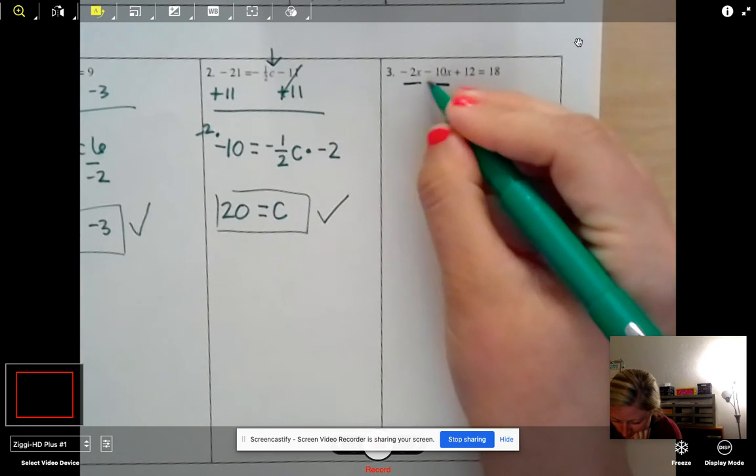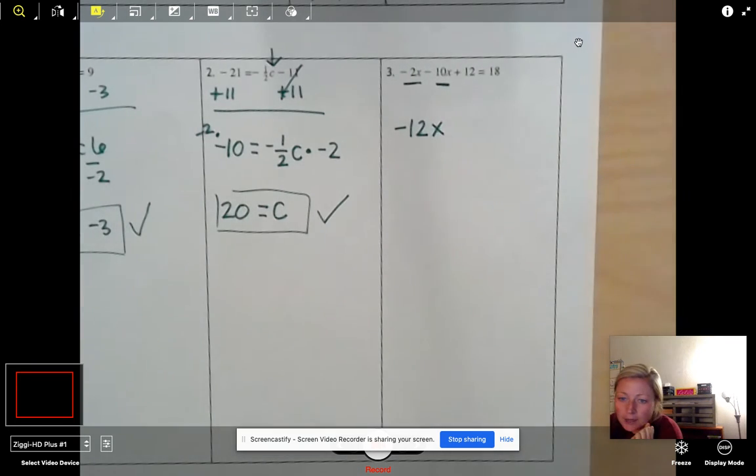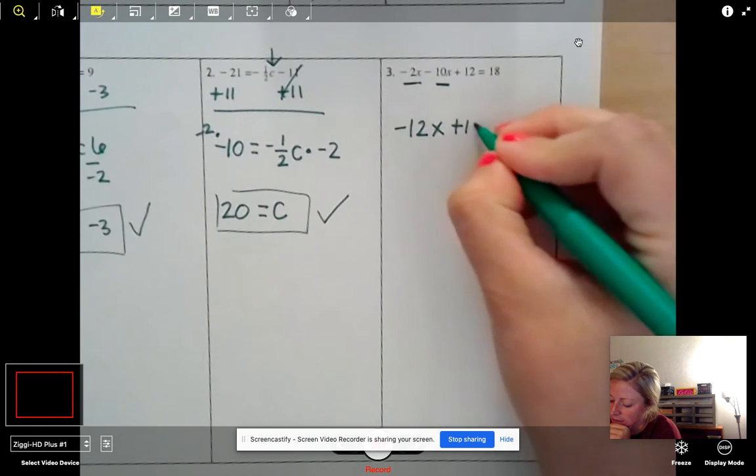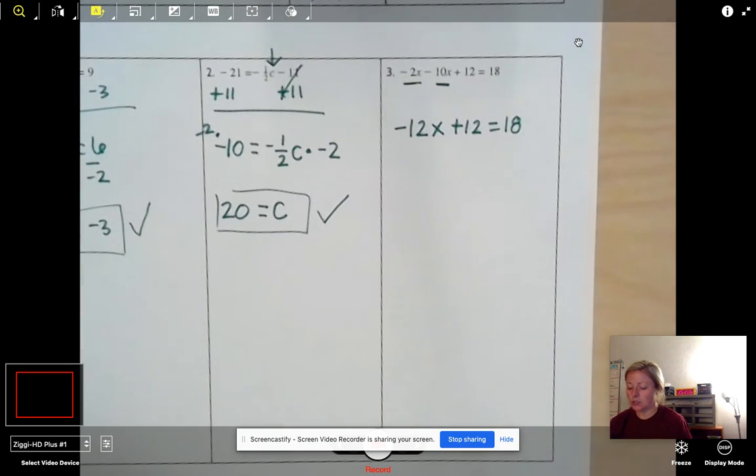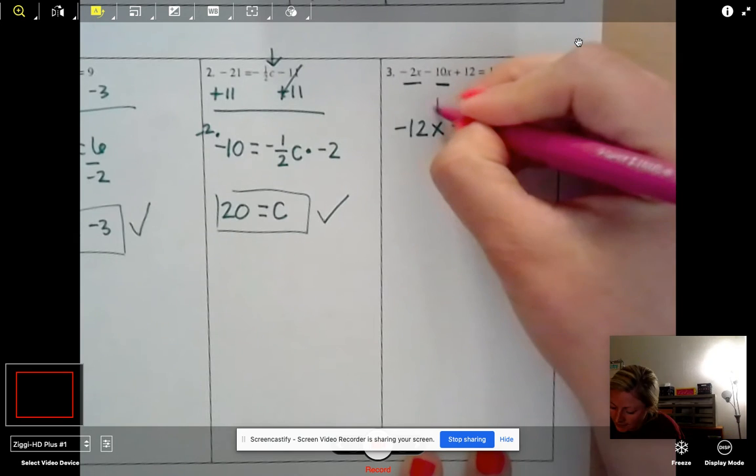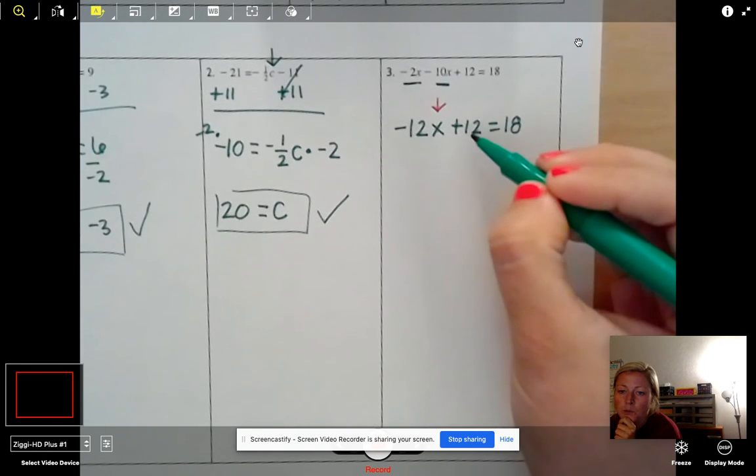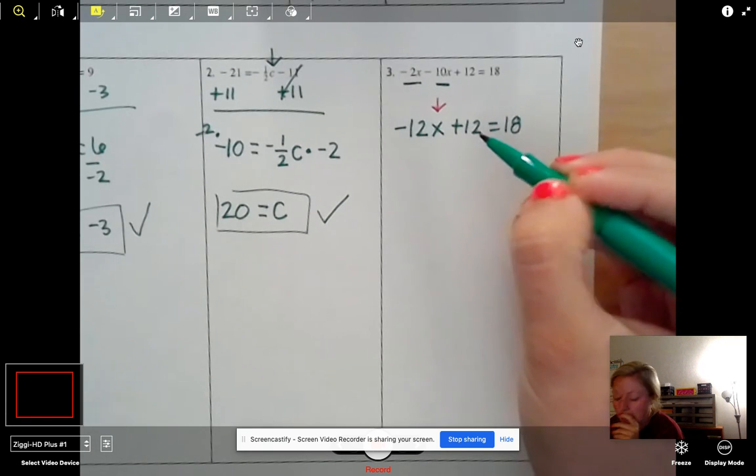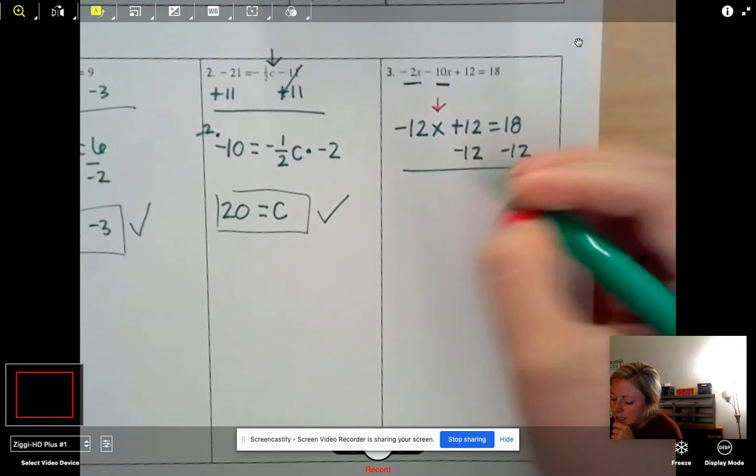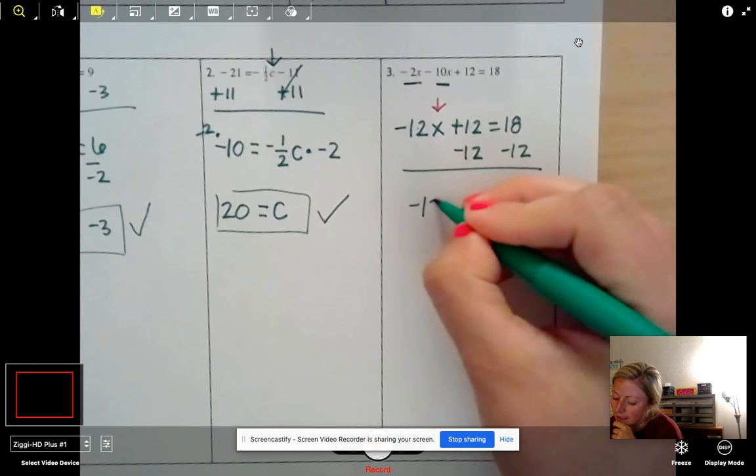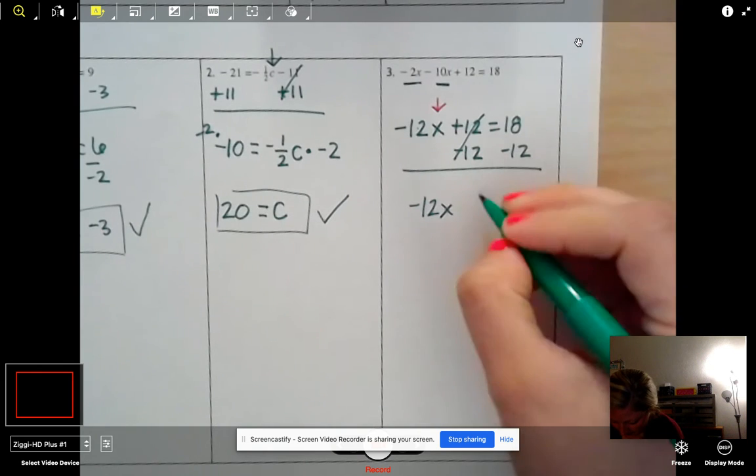So I have negative 2x and I'm subtracting 10 more. So negative 2 minus 10 more is negative 12x. And now we can write down the rest of the problem as we see it. So plus 12 equals 18. So our goal now is to get x alone. So I need to get that variable all by itself. So I first have to move this 12. What's the opposite of adding 12? Subtracting 12, subtracting 12. So I drop down by negative 12x. These say, see you later. 18 minus 12 gives me 6.